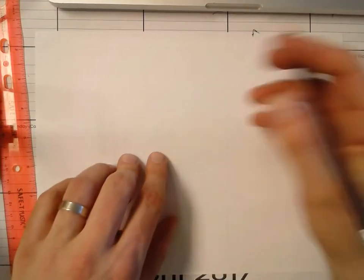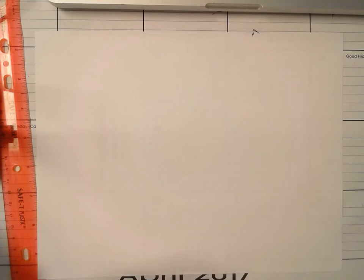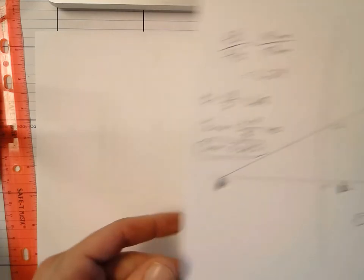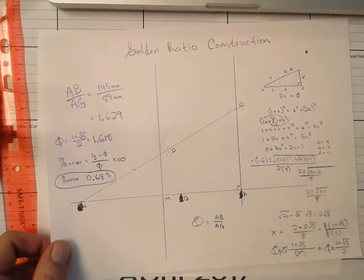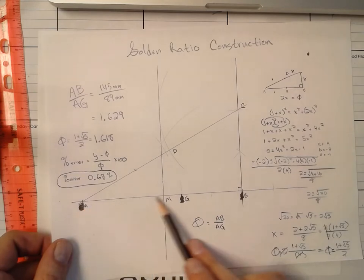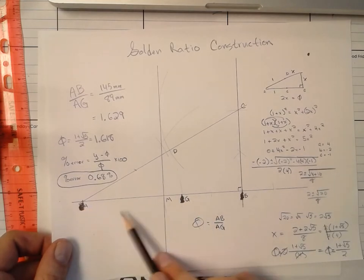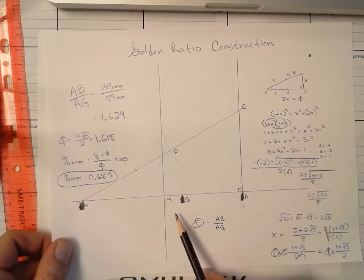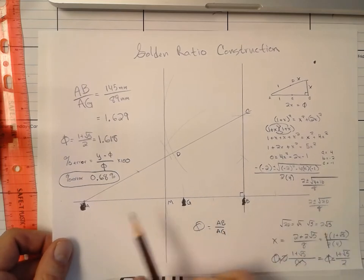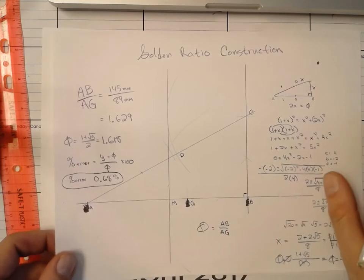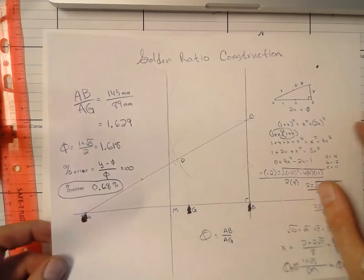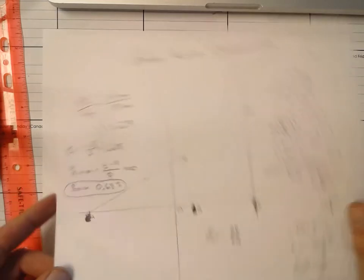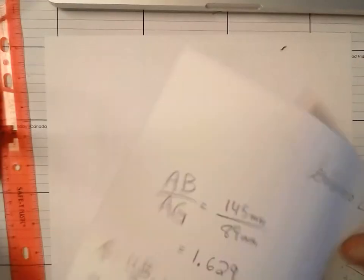All right, so now we're going to take a look at part two. A moment ago, we constructed golden segments AB divided by AG. So now we're going to take those two that we found, and we're going to make a golden spiral.